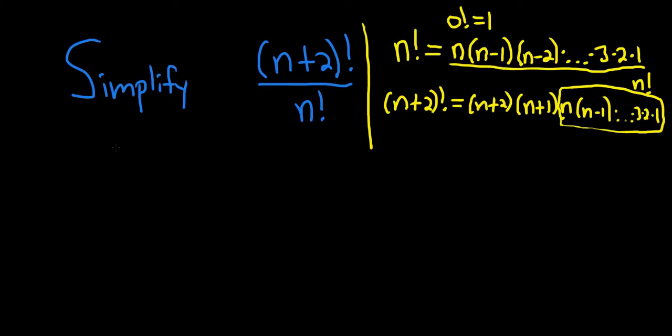So in problems like this, what you typically do is you write down your n plus 2 factorial over n factorial. Then you know that's n plus 2,